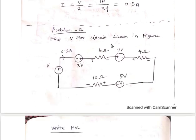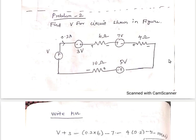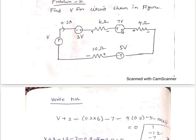Second problem: find the voltage V for the circuit shown in the figure. You can simplify the circuit like the previous problem, or you can directly write the KVL equation. In this, I've written KVL directly.